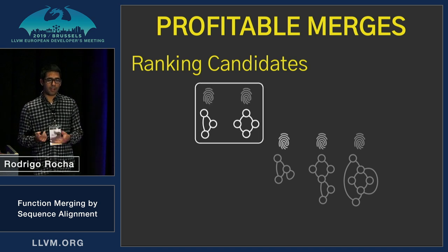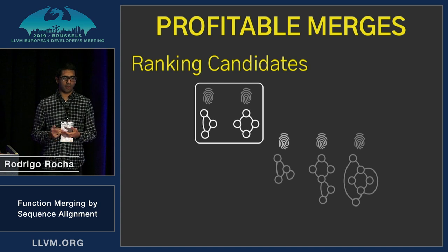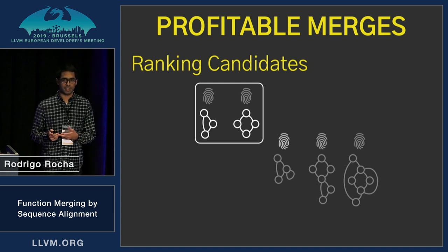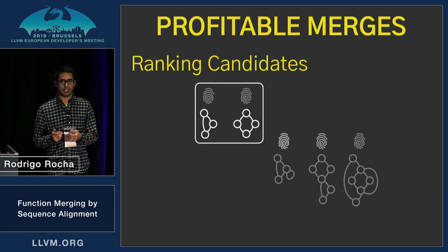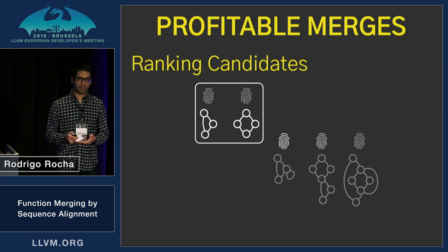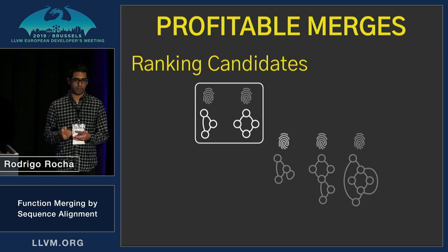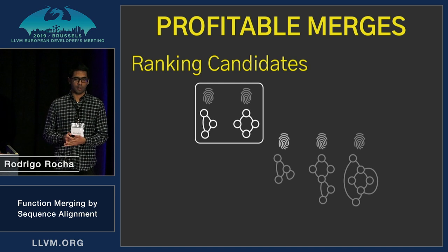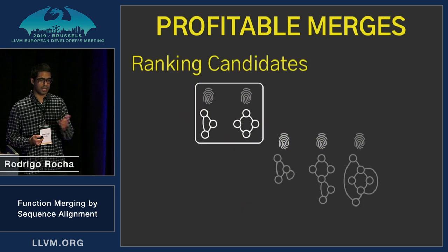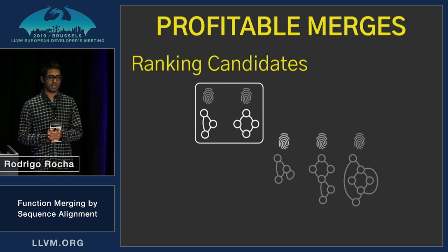After we merge, because we know the final function statically, it's very easy for us to check if we have actually reduced code size. We do that to decide whether we throw away the merge function or we keep it, and we do the same for the other functions as well.